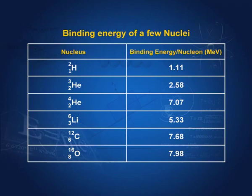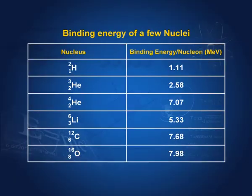Here we have deuterium, an isotope of hydrogen, with a binding energy of 1.11 MeV per nucleon. Helium-3 has a binding energy of 2.58 MeV per nucleon. Helium-4 has a binding energy of 7.07 MeV per nucleon. Similarly, lithium, carbon, and oxygen are also listed. If you want to find the total binding energy, multiply the binding energy per nucleon by the number of nucleons. For oxygen, the total binding energy would be 16 × 7.98 MeV.